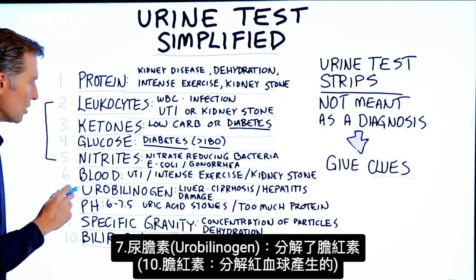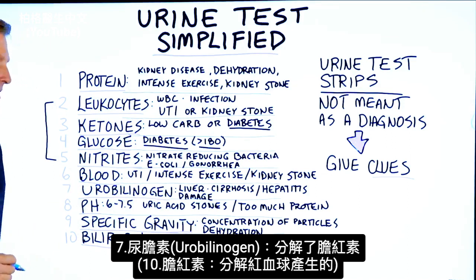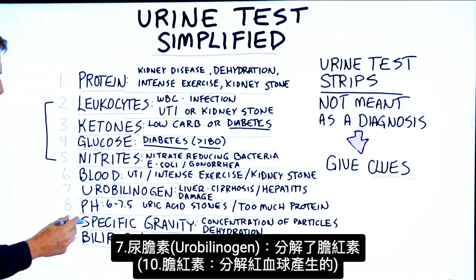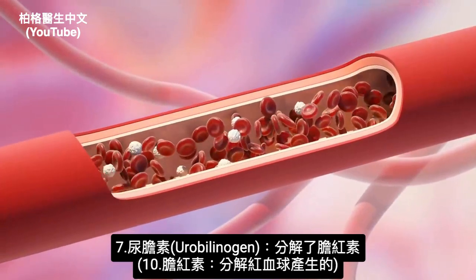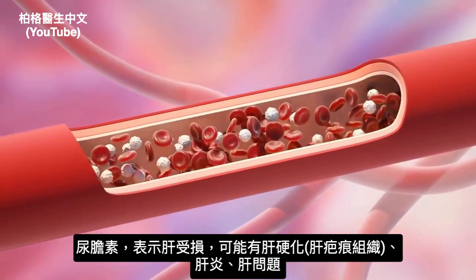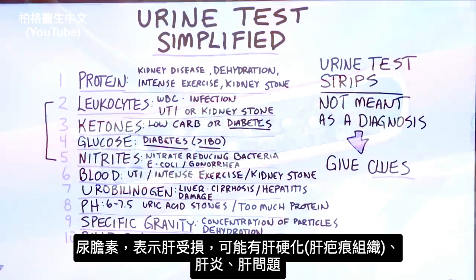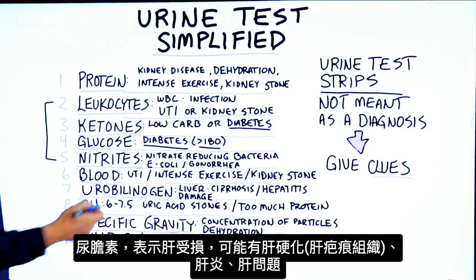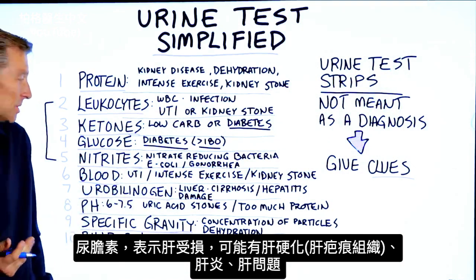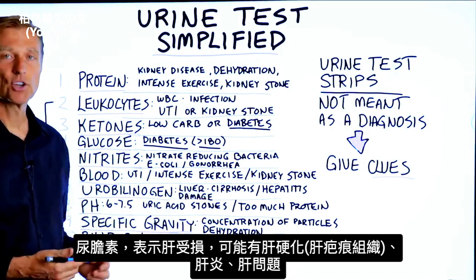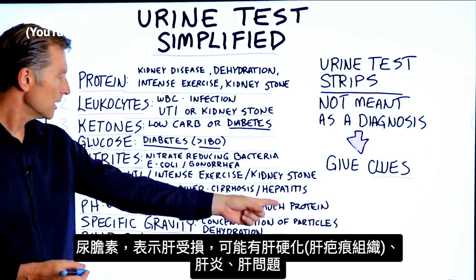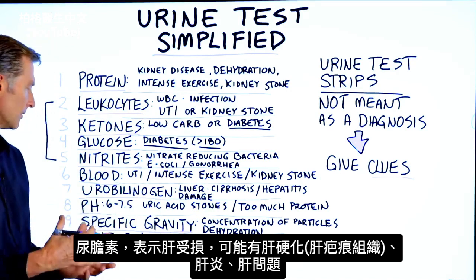Number seven, urobilinogen. What is that? That is the breakdown of bilirubin, which is a byproduct of red blood cells when they're broken down. So if there's urobilinogen, that's more of an indication of liver damage. It could potentially be cirrhosis — scar tissue of the liver — or inflammation of the liver, or any problem with the liver.